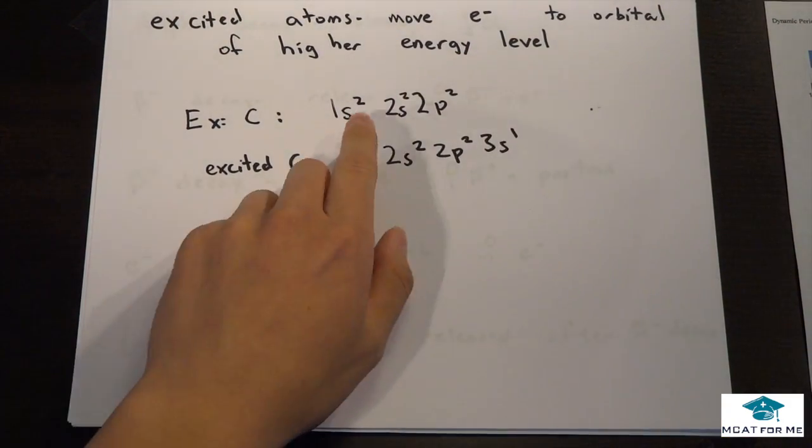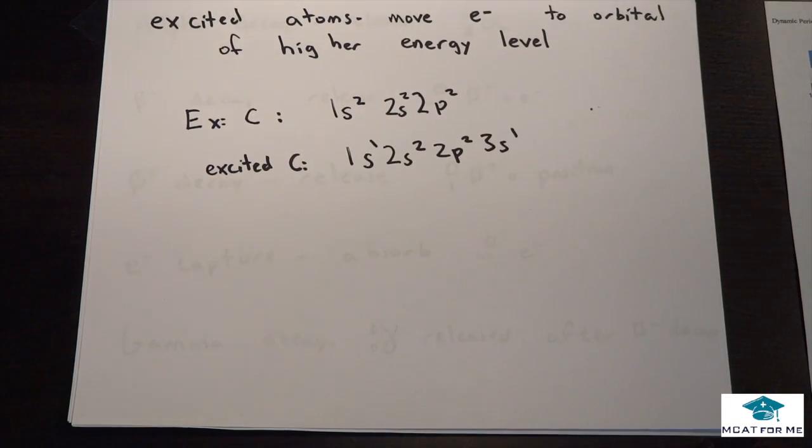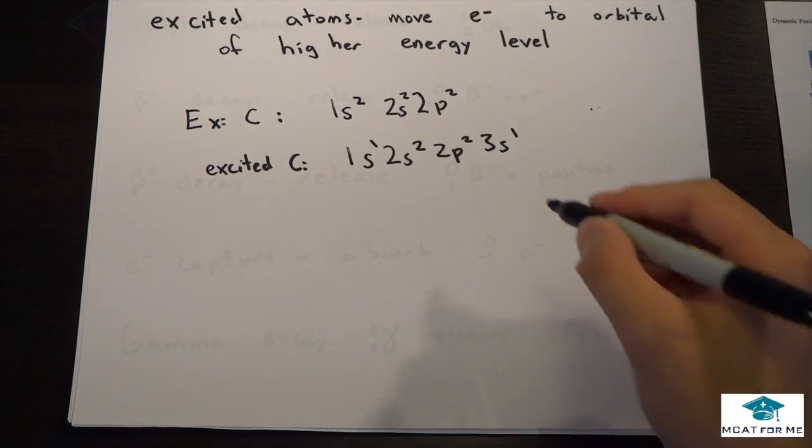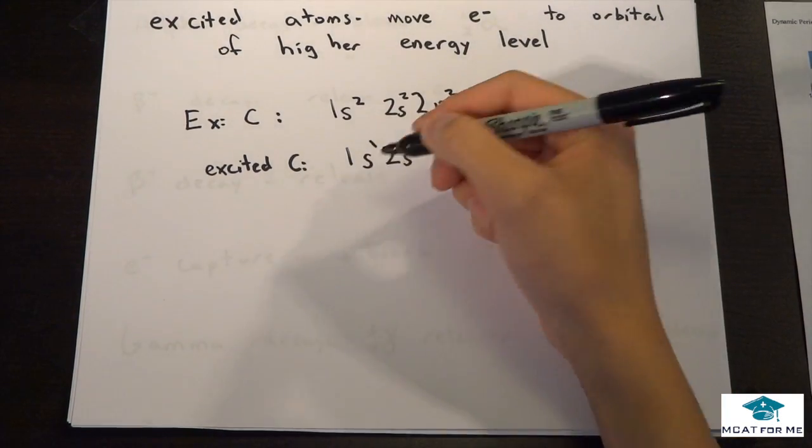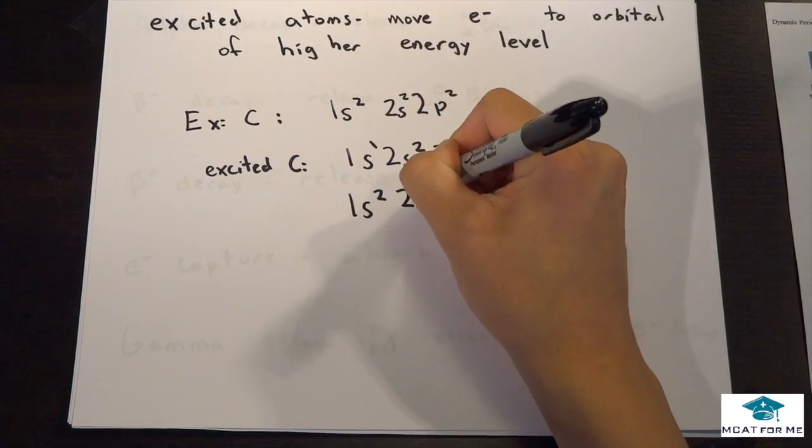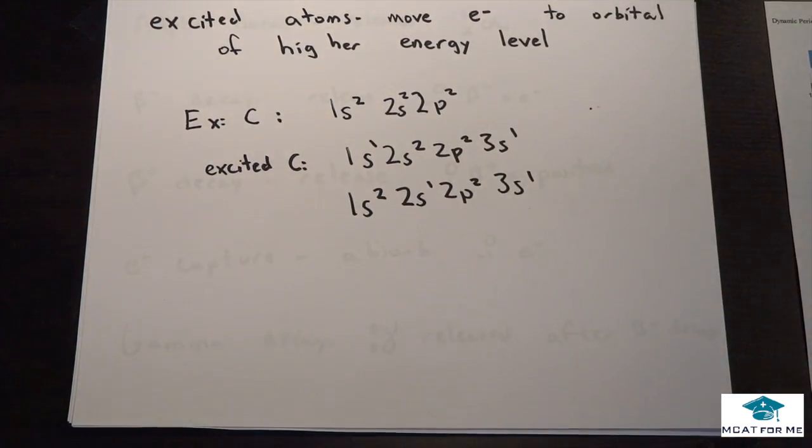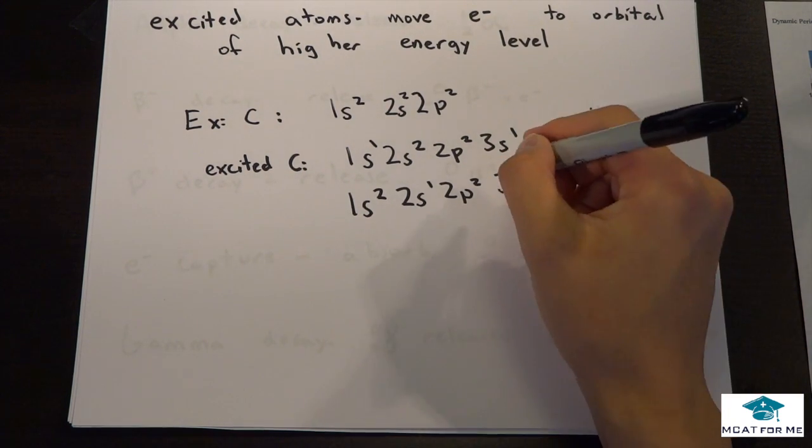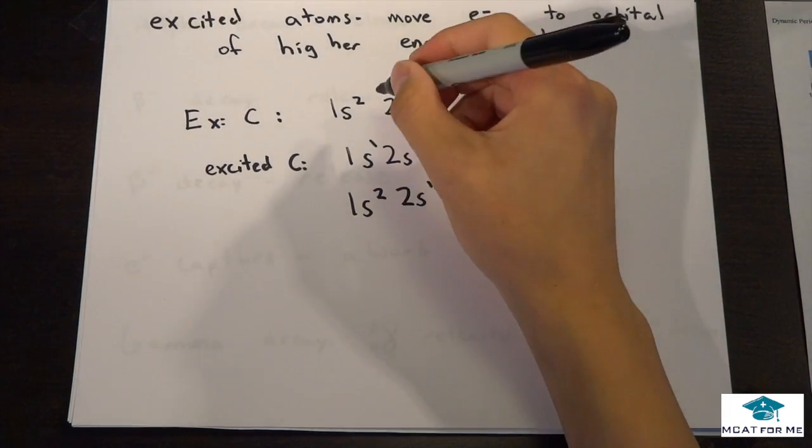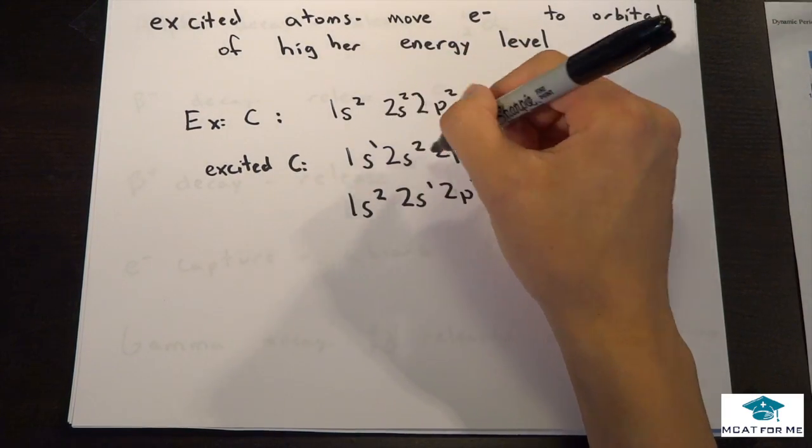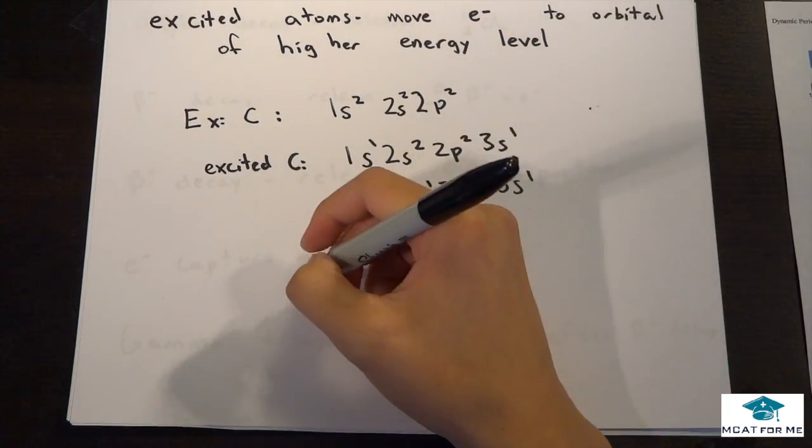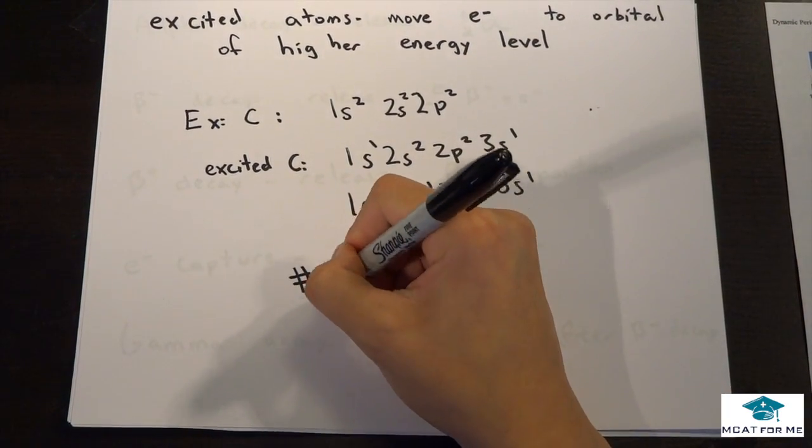We took one electron and we moved it to an even higher energy level, all the way to the 3s. Another example could be: we took a 2s electron and moved it all the way up to the 3s. But notice we never change the number of electrons. If we count, we have six here, six here, and six here.